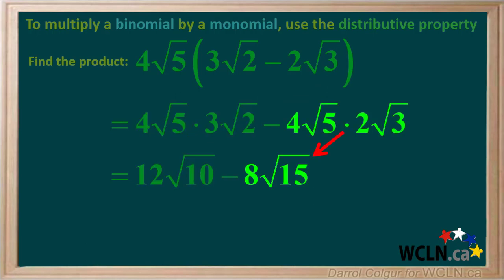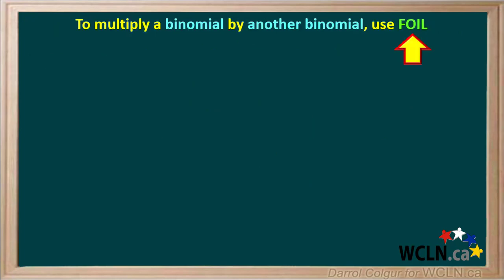And 4 root 5 times 2 root 3 is equal to 8 root 15. So we are left with 12 root 10 minus 8 root 15 as our final answer. Neither 10 nor 15 can be factored to perfect squares, so we cannot simplify this anymore. To multiply a binomial by another binomial, use FOIL — first, outside, inside, last.